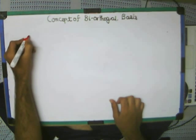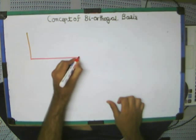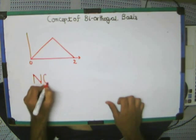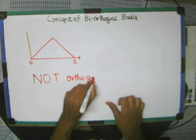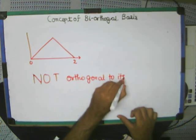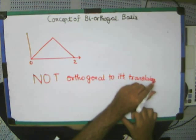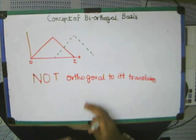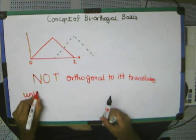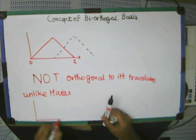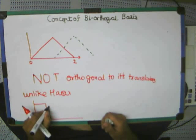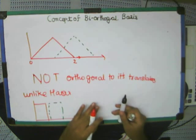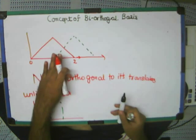This linear spline, or this structure, is not orthogonal to its translates. So if you just translate it, this is what happens. Are these two orthogonal? Unlike Haar — in Haar we had this orthogonal path because the functions were totally perpendicular, they had nothing in common. While in this kind of spline or triangular structure, they have something in common. So for this kind of structure, the need for a bi-orthogonal basis comes.